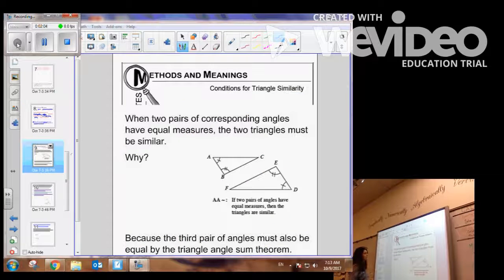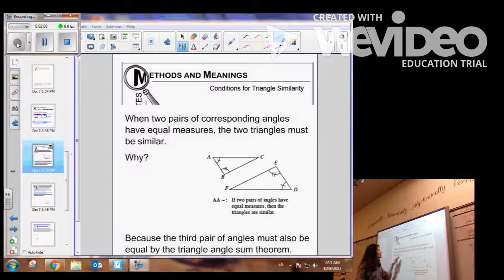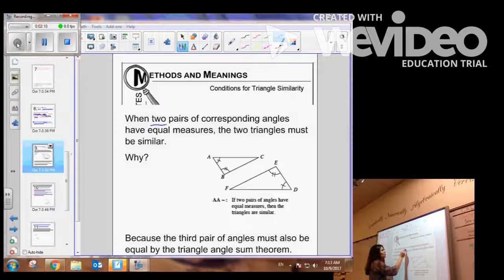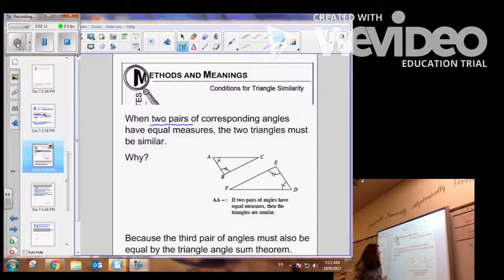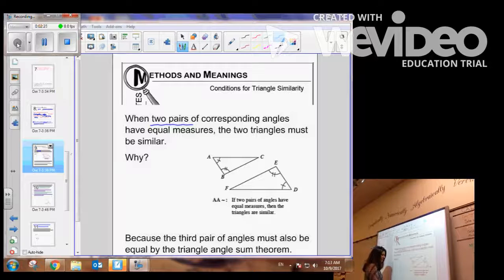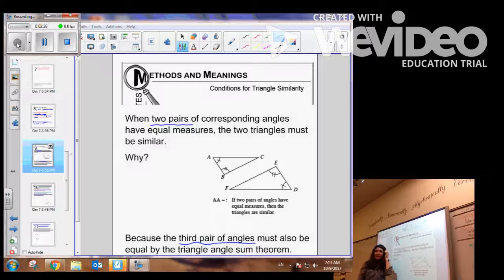Now, let's talk about our conditions. And the first condition that you looked at was angle-angle. Well, question for you. So when two pairs of corresponding angles have equal measure, the two triangles must be similar. Well, why don't you have to show that all angles have equal measure? Well, the reason being is because the third pair of angles must also be equal by the triangle-angle sum theorem.